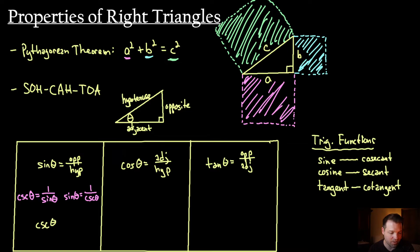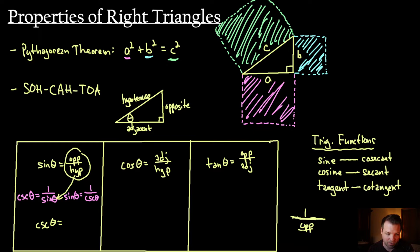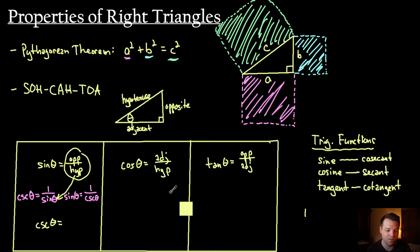If I wanted to solve for cosecant of theta, or write it in terms of the side lengths — sine of theta is equal to opposite over hypotenuse, and cosecant of theta is equal to 1 over sine of theta. If I substituted opposite over hypotenuse for sine of theta, then I would say this is 1 divided by opposite over hypotenuse. When I divide by a fraction, it's the same thing as multiplying by the reciprocal, so that would be hypotenuse over opposite. So cosecant of theta is the flipped version of sine of theta — it is the hypotenuse over the opposite.